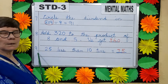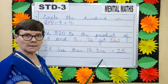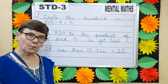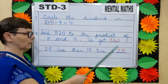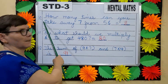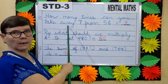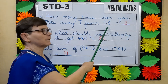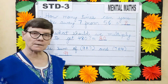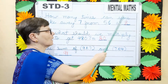Question number 9: 25 less than 10 tens. What are 10 tens? 100. 100 minus 25 will give you 75. Question number 10: How many times can you take away 7 from 56? Say your 7 times table till you come to 56. Yes — 7 eights are 56.